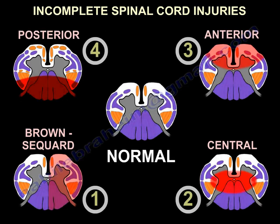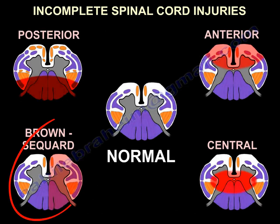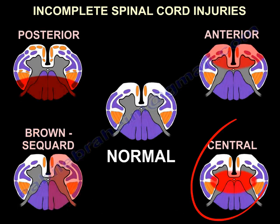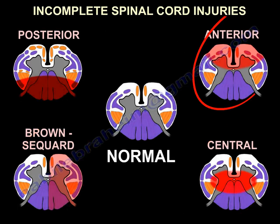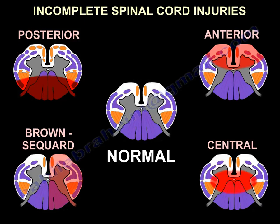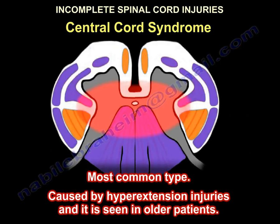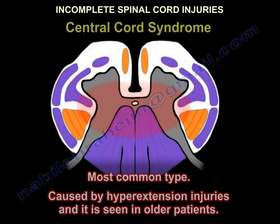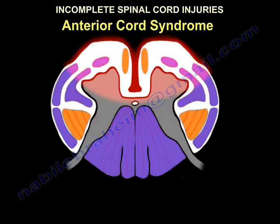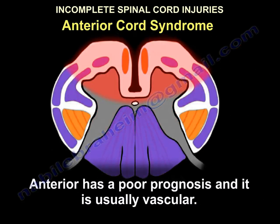There are four types of incomplete spinal cord injury: Brown-Séquard syndrome, central cord syndrome, anterior cord syndrome, and posterior cord syndrome. Central cord syndrome is the most common type and is seen in hyperextension injuries, often in older patients. Anterior cord syndrome has a very poor prognosis and is usually vascular in origin.